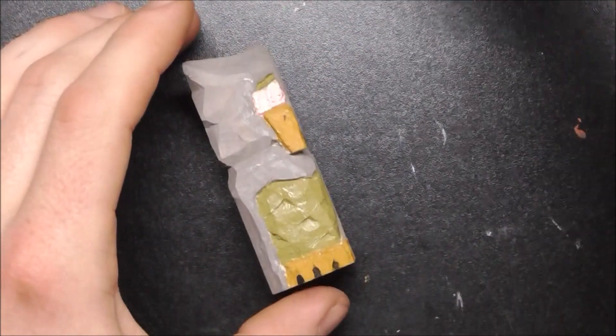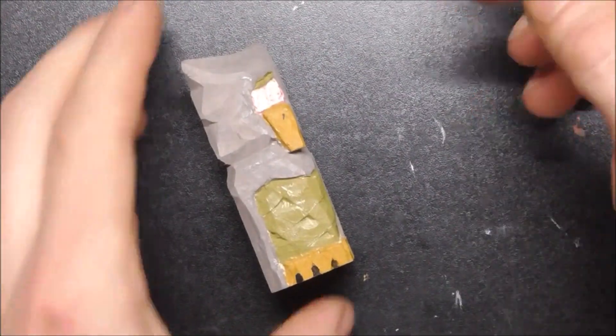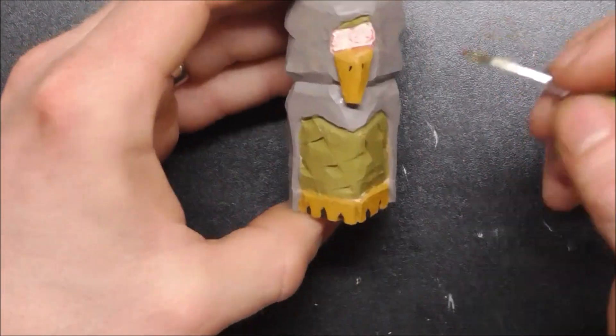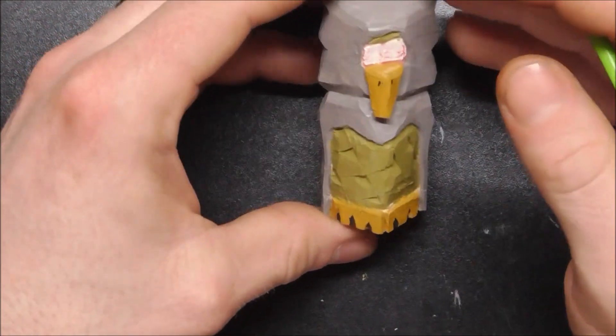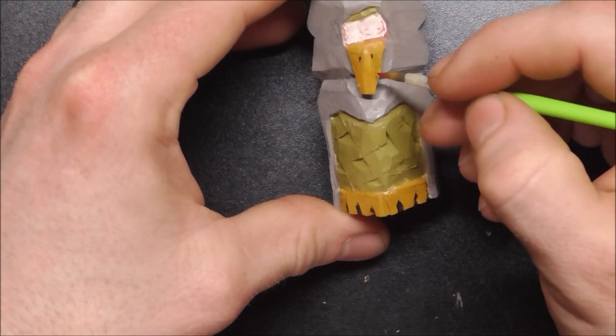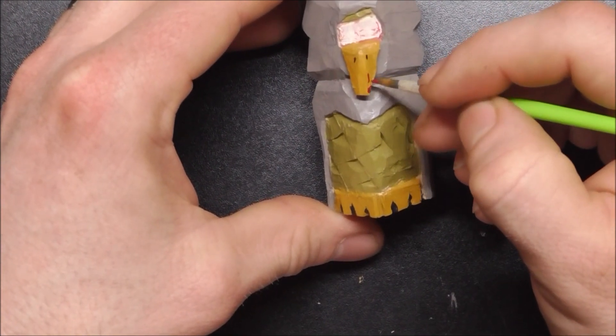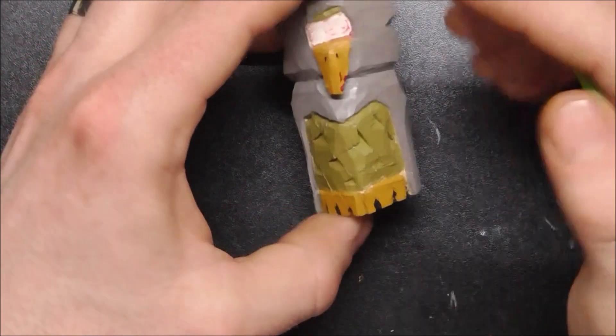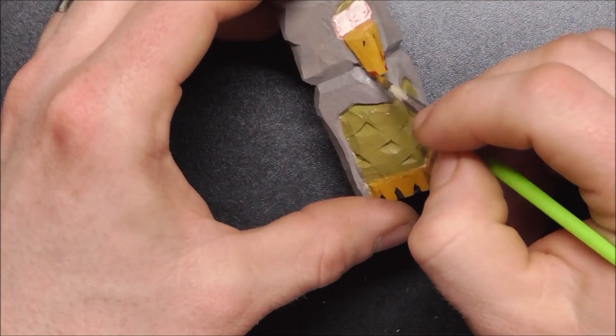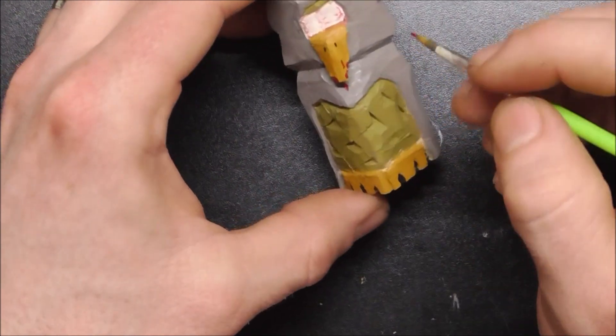So with the same crimson red, I'm not diluting any of it. I'm just taking a fine brush and kind of just putting a little bit on the beak and kind of dribbling down on the chest of the owl, just to give it that look like it was just eating something.